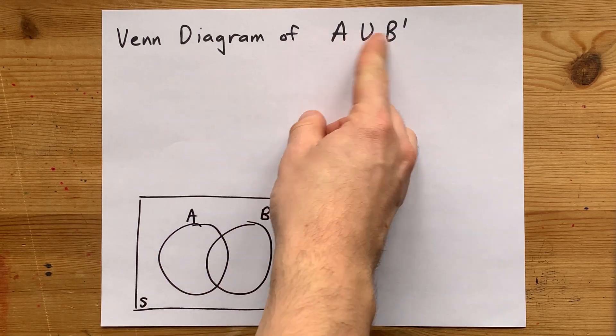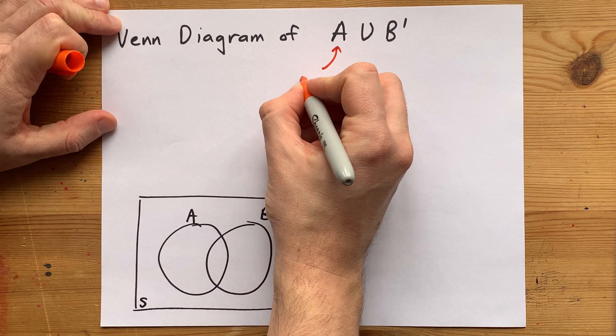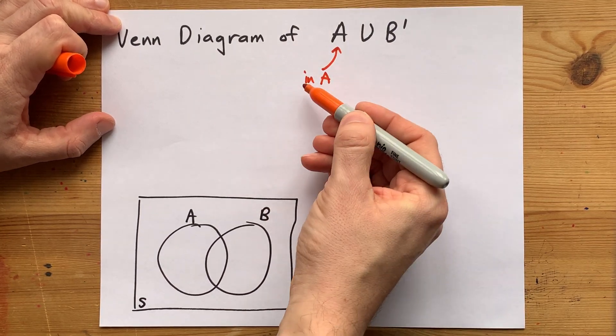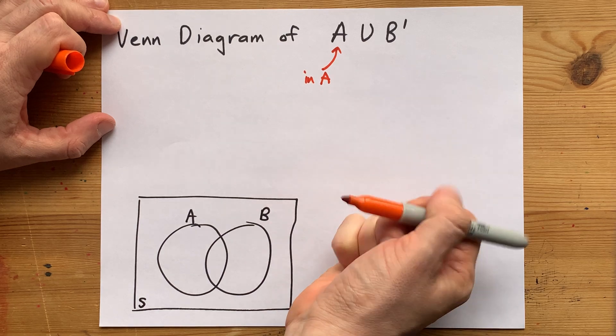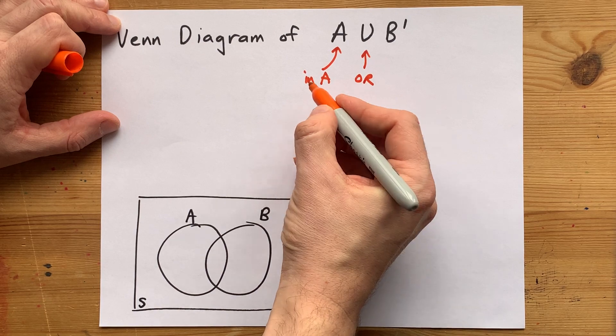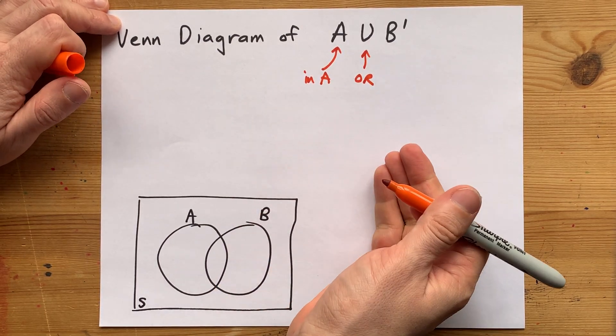And now I just have to figure out what this is trying to tell me. A means that a section counts if it is inside of the A circle. Union is code for OR, which means that only one of these conditions has to be true for a section to be shaded.